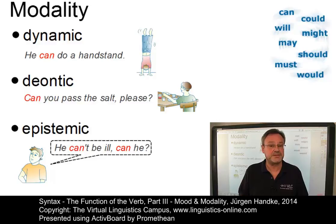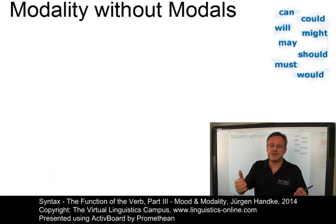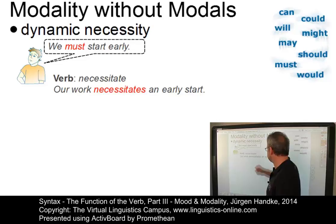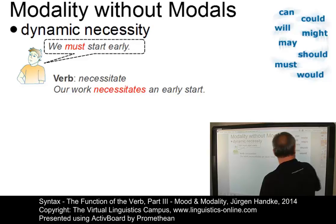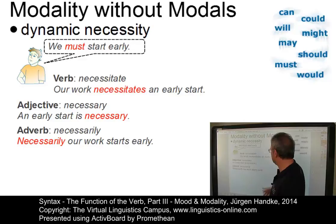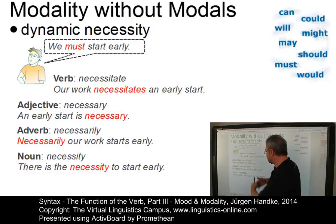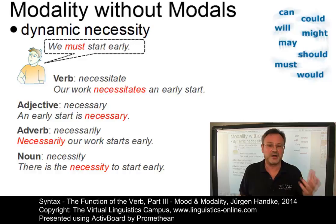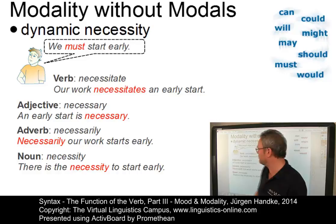For example, taking dynamic necessity — 'we must start early' — we can find alternatives using verbs (the verb 'necessitate': 'Our work necessitates an early start'), adjectives ('An early start is necessary'), adverbs ('Necessarily our work starts early'), and nouns ('There is the necessity to start early'). The central means to express the different kinds of modality in present-day English, however, are the modal verbs. Let's illustrate how they express the three types of modality, starting with dynamic modality.